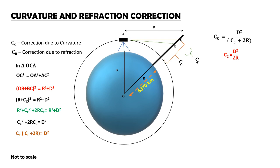So, substituting this value, we get CC is equal to 7.85 into 10 power minus 5 D square, and you will get CC in terms of kilometer from this equation.